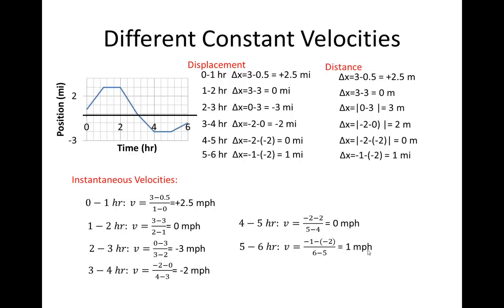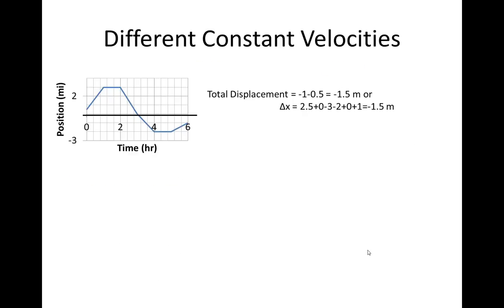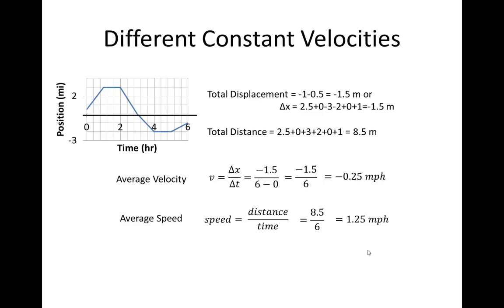Now let's look at the longer term information. Total displacement is the final position, which is negative 1, minus the initial position, which is 0.5, so that's negative 1.5. Alternatively, you can just add up the individual displacements and get the same thing. Distance: add up the individual distances, and that's how you get the 8.5. Or another way is take the absolute value of the individual displacement variables and then add those up. Average velocity is total displacement divided by total time, so negative 1.5 divided by 6, so negative 0.25 miles per hour, and then 1.25 miles per hour for speed.